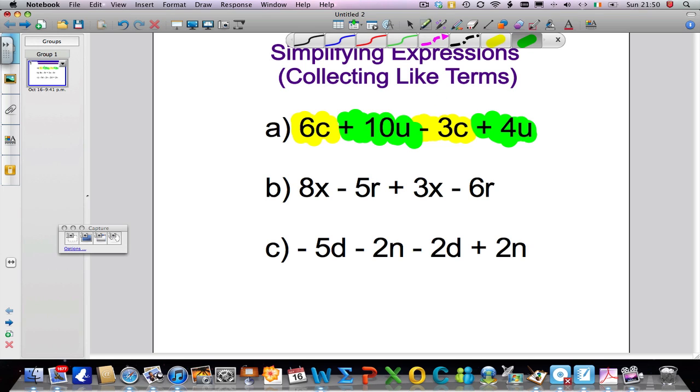And then what we do is we just add or subtract what is necessary. So when I simplify this down, 6c - 3c gives me 3c. And 10u + 4u gives me a total of 14u. And that's it. I cannot simplify that down. That's as far as we can go, so that is simplified or all the like terms have been collected.